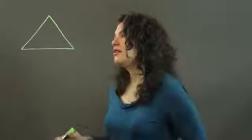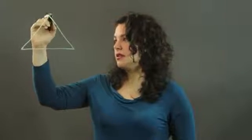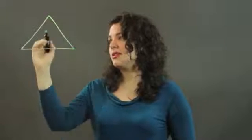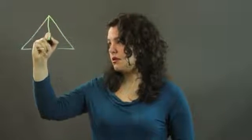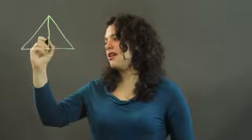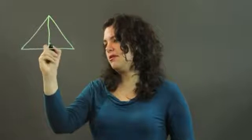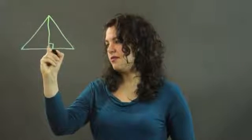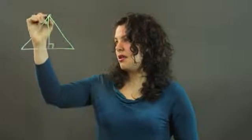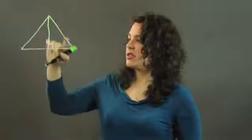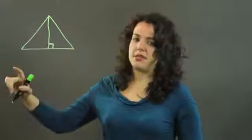So if we have a line that's perpendicular to the side opposite the vertex — there's our line, there's our line that's perpendicular. It connects this vertex to the opposite side.